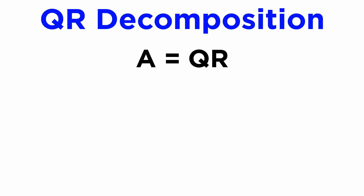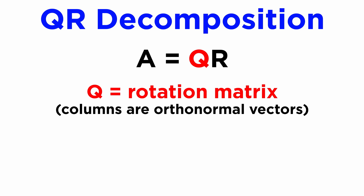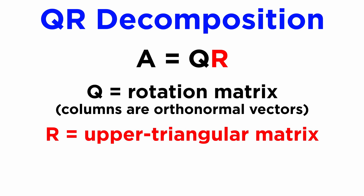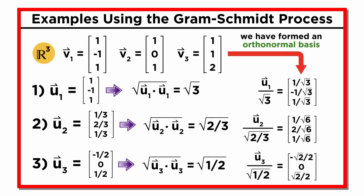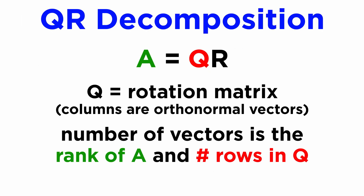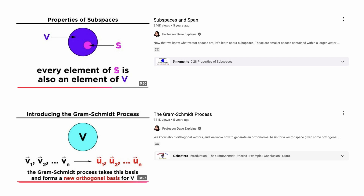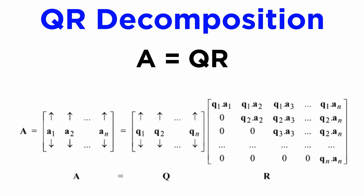Next up is the QR decomposition. For a given matrix A, we can write A equals Q times R, where Q is a rotation matrix, meaning its columns are all orthonormal vectors, and R is an upper triangular matrix. We can use the Gram-Schmidt process to find suitable column vectors for Q, as these will be a minimal set of orthonormal basis vectors that span the column space of A. The number of such vectors we can find is equal to the rank of the matrix A, and this will be the number of rows in our matrix Q. Once we've found Q, we can immediately compute R by taking the dot product between the columns of A and Q as shown here.